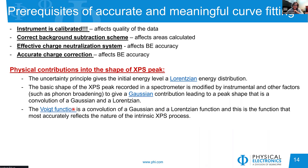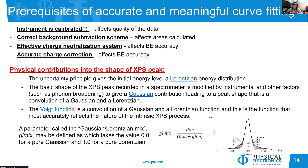The Gaussian-Lorentzian mix can be either a product or a sum of the two functions. When the Lorentzian contribution is zero, the mix equals zero and we have 100% Gaussian contribution. When the Gaussian contribution approaches zero, we have almost 100% Lorentzian — which varies the shape quite a lot. This Gaussian-Lorentzian character can be used as a fixed value or as a fitting parameter in the model.